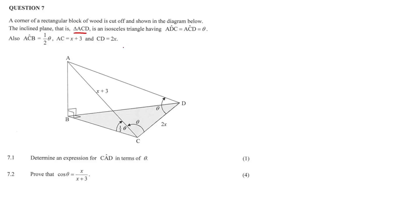It's an isosceles triangle having two sides equal and then two opposite angles. So if that's x plus 3 on this side and we've got theta here, theta there, definitely x plus 3 on this side as well.